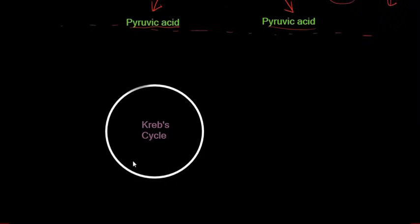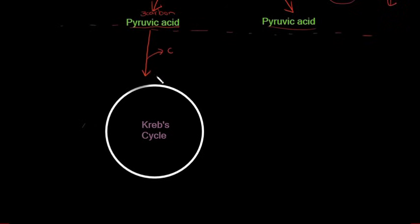For the Krebs cycle, we'll work only on the left-hand side since whatever happens there also happens on the right. The pyruvic acid, a three-carbon molecule, goes into the Krebs cycle. When it enters, it releases a carbon — leaving a two-carbon molecule that actually enters the cycle. This is a simplified explanation to help understanding.